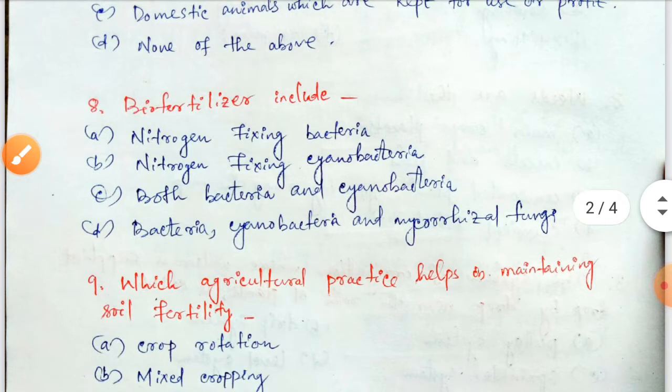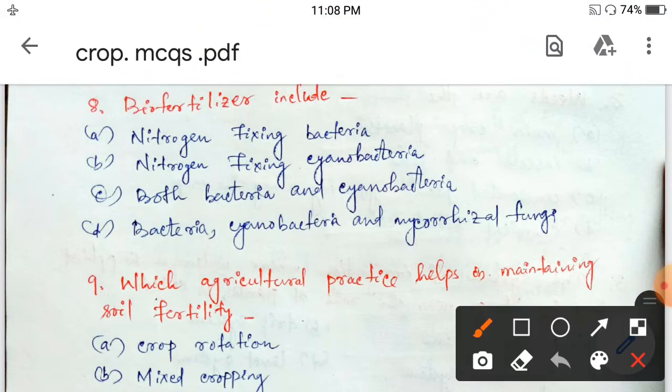Next question: biofertilizers include — nitrogen fixing bacteria, nitrogen fixing cyanobacteria, both bacteria and cyanobacteria, or bacteria, cyanobacteria and mycorrhizal fungus? Biofertilizers are of three types: nitrogen fixing bacteria, nitrogen fixing cyanobacteria, and mycorrhizal fungus. So option D is correct.